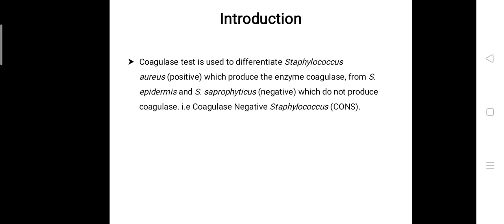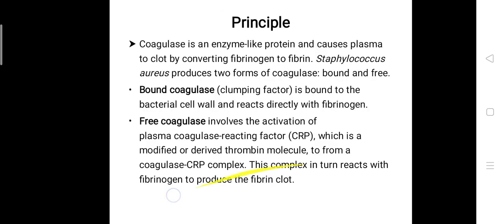Now the principle of this coagulase test is: coagulase is an enzyme-like protein and causes plasma to clot by converting fibrinogen to fibrin. Staphylococcus aureus produces two forms of coagulase, that is bound and free.